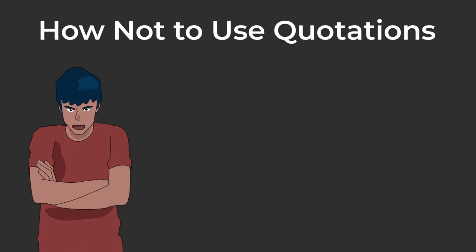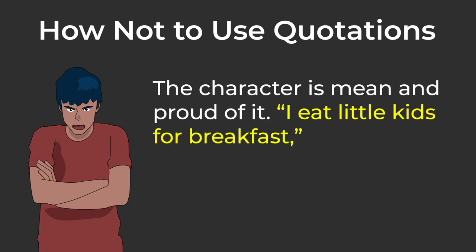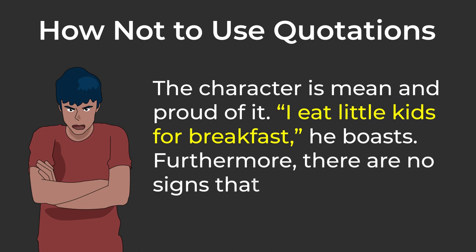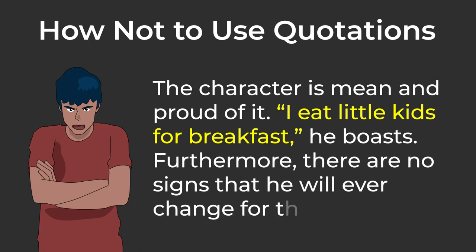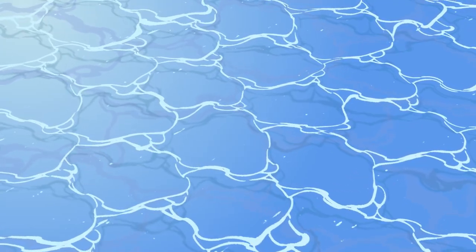This is the better way: "The character is mean and proud of it. 'I eat little kids for breakfast,' he boasts. Furthermore, there are no signs that he will ever change for the better." When integrating quotations into your writing, it's good to go with the flow.